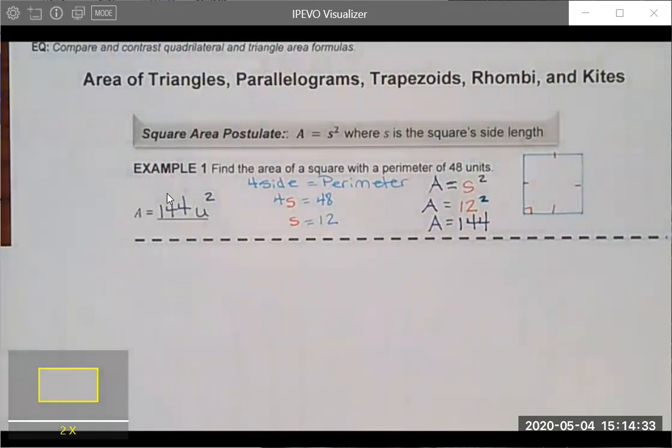To start the first lesson that we're going to cover today, we're just looking at area formulas that you've probably seen in the past at some point, with the exception maybe of the rhombi and kites. But hopefully you've seen area formulas for triangles, squares, trapezoids, rectangles, parallelograms, all of those before.